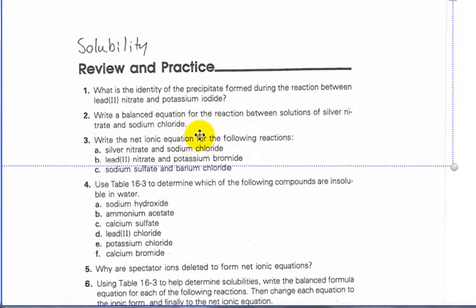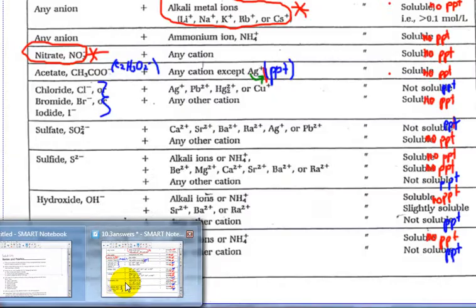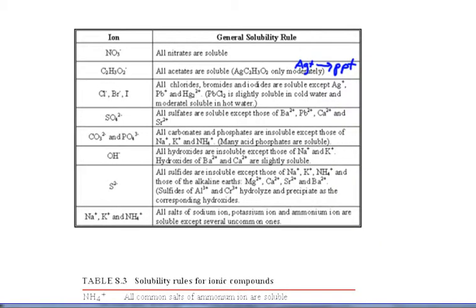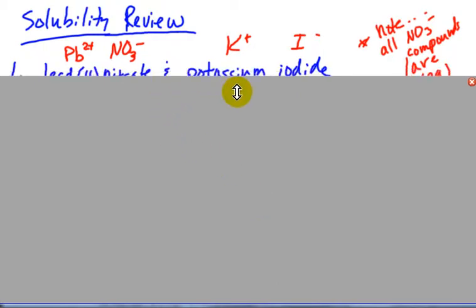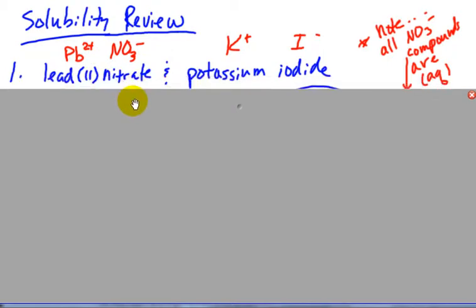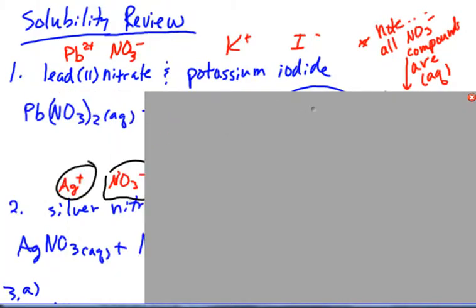If we look at number 1, what is the identity of the precipitate formed when lead(II) nitrate combines with potassium iodide? The key thing to do first is write down what each of those are. Lead(II) is the lead 2 ion. From your pink sheet, you pull these ions. Lead 2 is Pb2+, nitrate is NO3-, potassium is K+, iodide is I-. From that, you can figure out the formula for each.